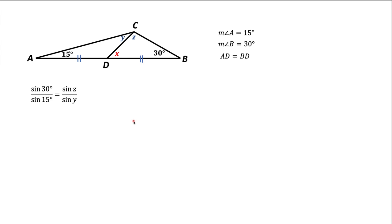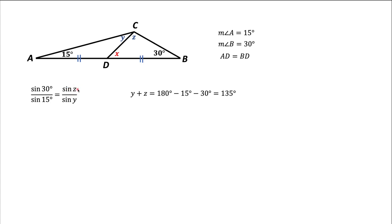Let's rewrite this cleanly. Angles Y and Z are related to each other — we're dealing with triangle ABC, and the sum of all angles in the triangle is 180 degrees. One angle is 15 degrees, another is 30 degrees, and the third angle is Y plus Z. Together they give 180 degrees, which means Y plus Z equals 180 minus 15 minus 30, giving us 135 degrees. So we can rewrite angle Z as 135 degrees minus Y.